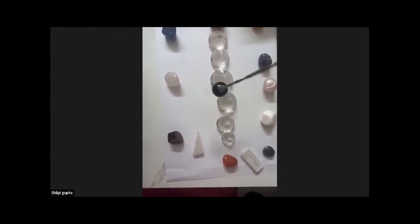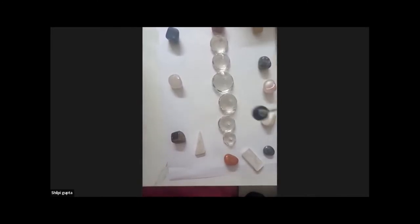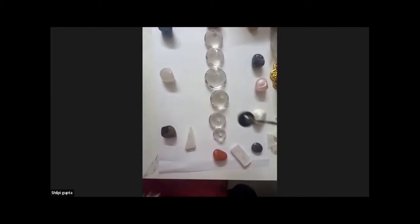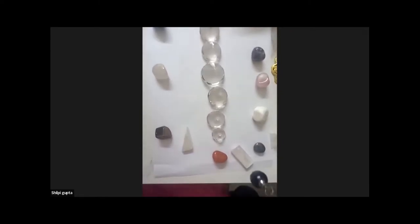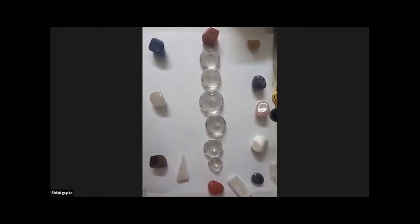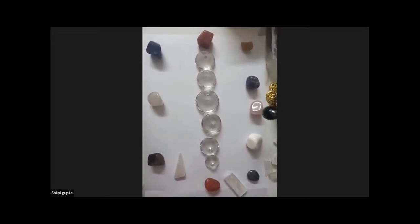My solar plexus chakra is elliptical, which means that energy is imbalanced. Now what I will do is ask the dowser what color and which crystals energy is required for my system now. I will test with one crystal - is the energy of this crystal required for my solar plexus chakra?